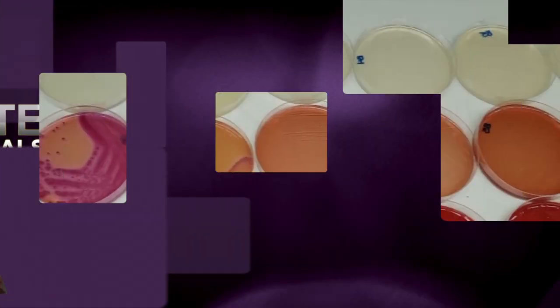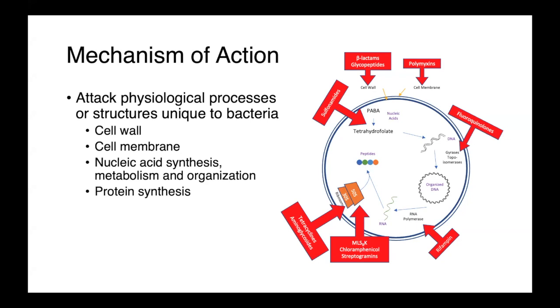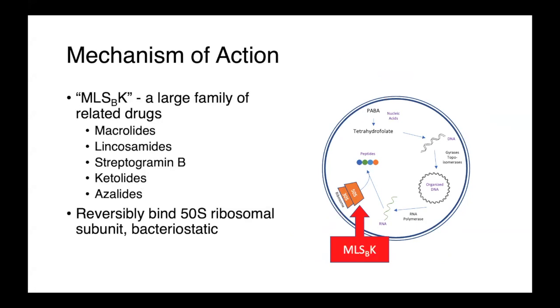The macrolide type drugs are protein synthesis inhibitors, which act by binding to the 50S ribosomal subunit. These include a number of subfamilies: true macrolides, lincosamides, streptogramin Bs, ketolides, and azalides, oftentimes abbreviated as MLSBK.